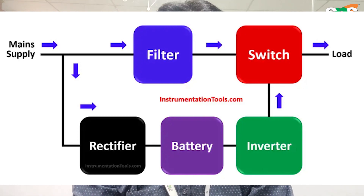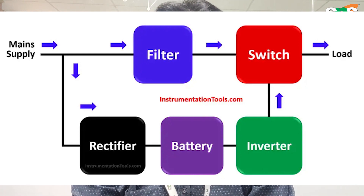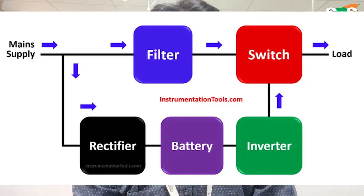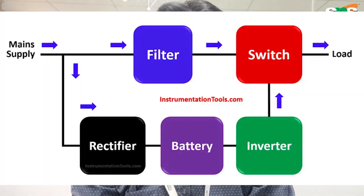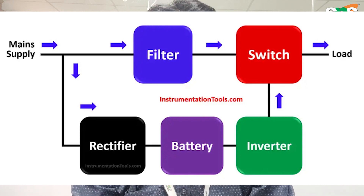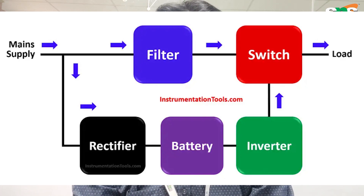The battery capacity is decided based on the power utilization in the hospital. When a power shortage happens, the stored energy in the battery — which is DC — is supplied to the inverter, and the inverter converts the DC supply into an AC supply that is ready to use for hospital equipment. This is the conversion process in an uninterrupted power supply.